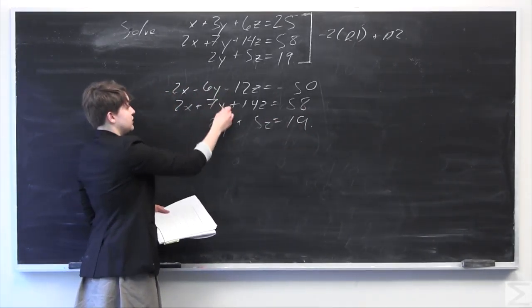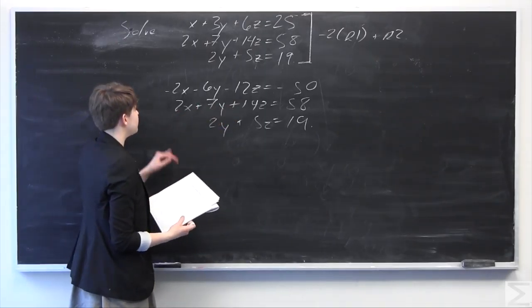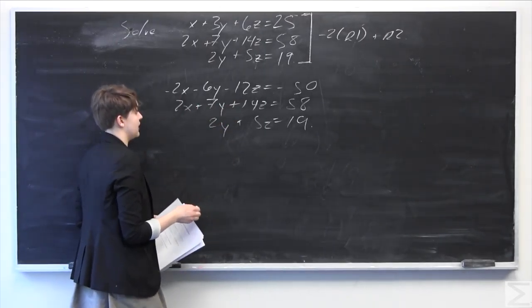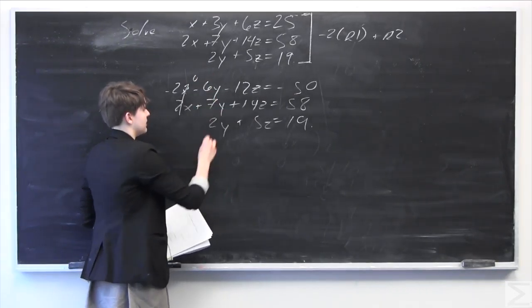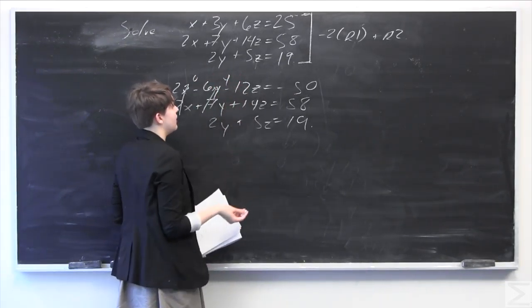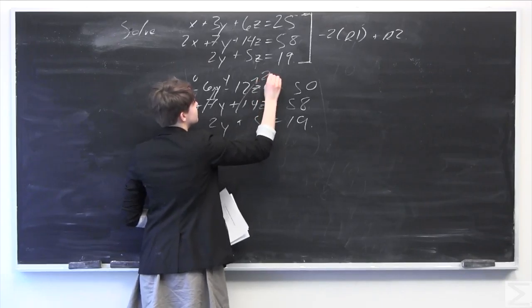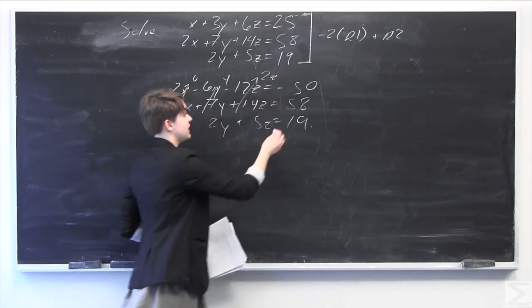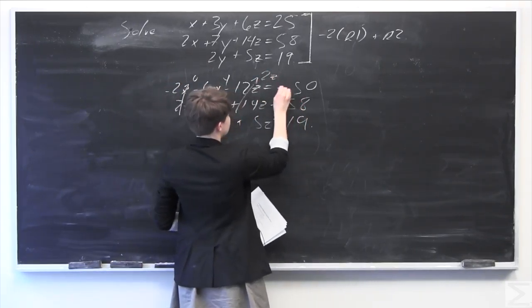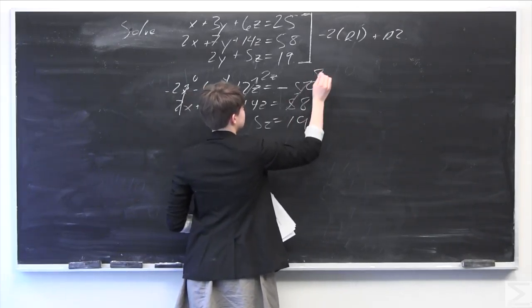We're going to add these two rows and replace the second row with that. Negative 2x plus 2x equals 0, negative 6y plus 7y equals y, and 14z minus 12z equals 2z. And 58 minus 50 is 8.